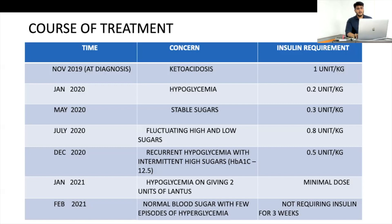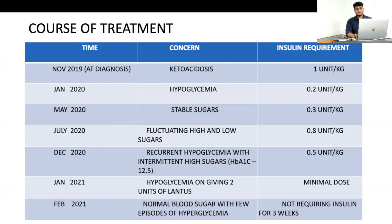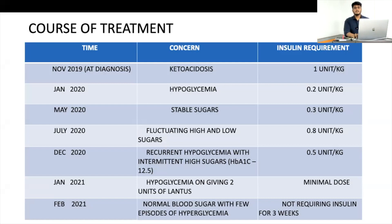We started doubting the diagnosis of type 1 and honeymoon phase. Her HbA1c was very high despite complaining of hypoglycemia. With an HbA1c of 12.5% you doubt whether sugars are being measured properly. We were not thinking of a monogenic cause because of the high HbA1c, but once things became more complicated we pursued it. We kept insulin at a minimum dose of around 0.5 unit/kg.